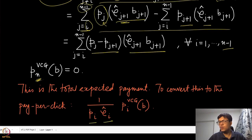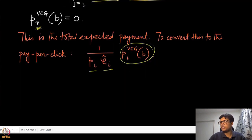πᵢ times ρᵢ hat is essentially the probability of getting a click for this agent i, which is at the ith position. If that quantity is in the denominator and the payment that we have just discussed is in the numerator, that is the payment that this agent makes for every click. And that is how the VCG mechanism is actually implemented in the context of sponsored search auctions.